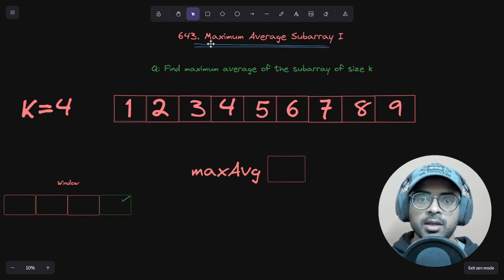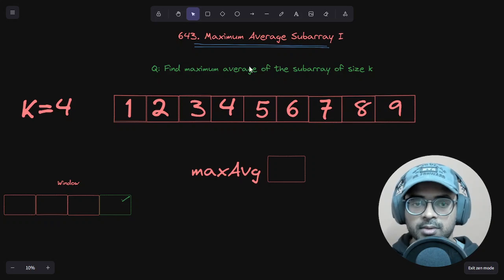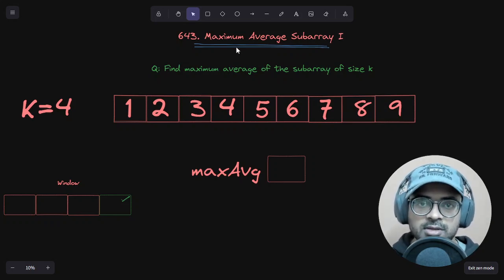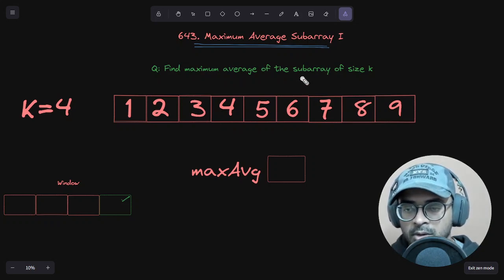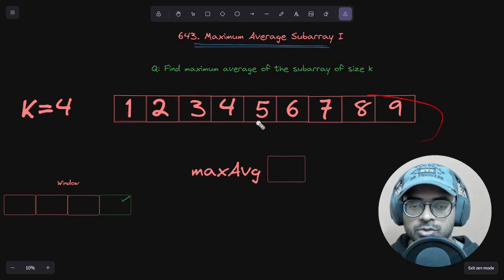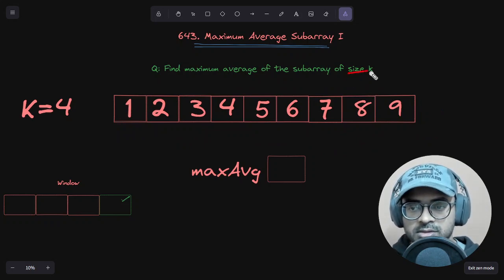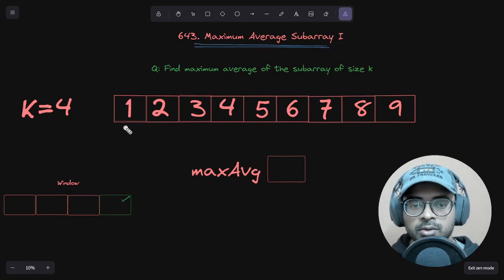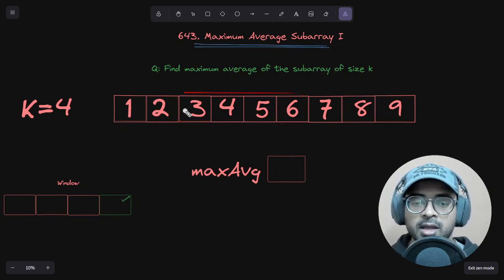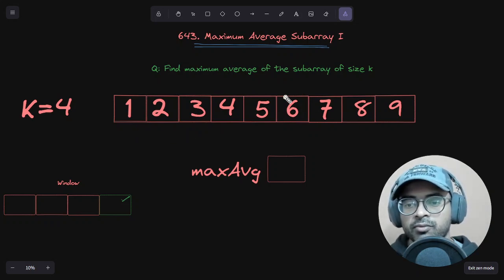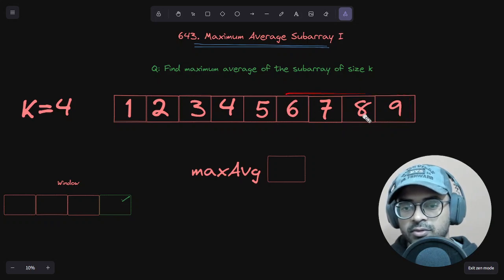Today's question is LeetCode 643: Maximum Average Subarray I. In a nutshell, the question asks us to calculate the maximum average of all subarrays of size k in a given array. With a given array from one to nine and k equal to 4, we make subarrays of size k, calculate the average of those four elements, note it down, then move forward and calculate the average of the next four elements, and so on until we've covered all windows.